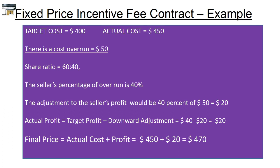Looking at the example carefully, it is evident that there is a cost overrun. The actual cost is $450 whereas the target cost was $400, so there is a cost overrun of $50. As there is an overrun, the target profit will be adjusted down by the seller's percentage of the overrun. Since the share ratio is 60:40, the seller's percentage is 40%, and the adjustment to the seller's profit would be $50 × 40% = $20.